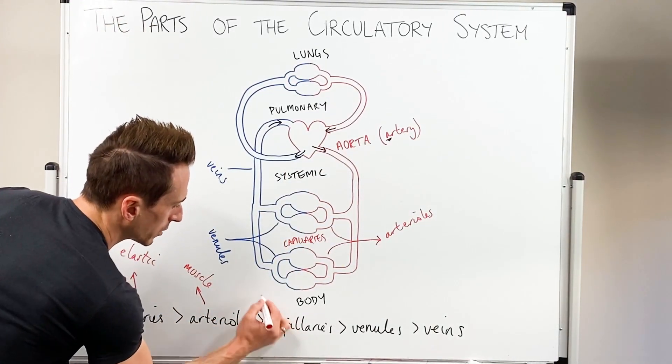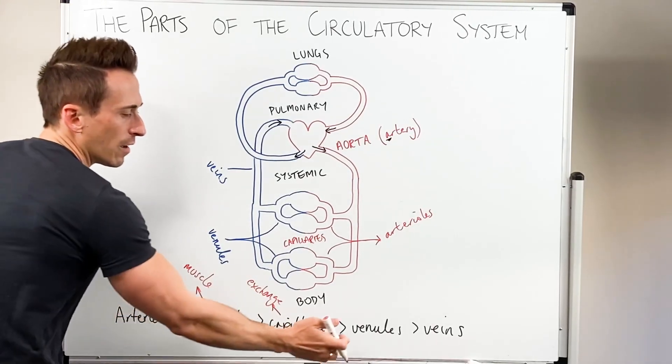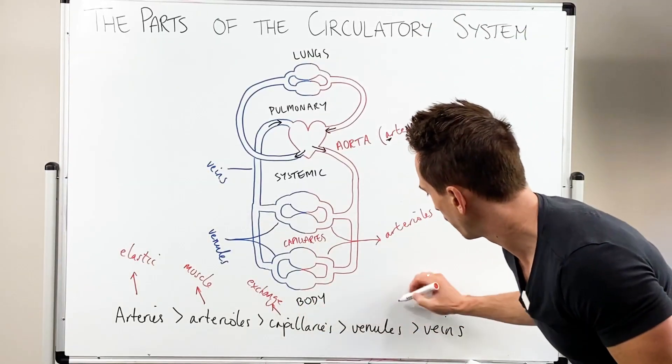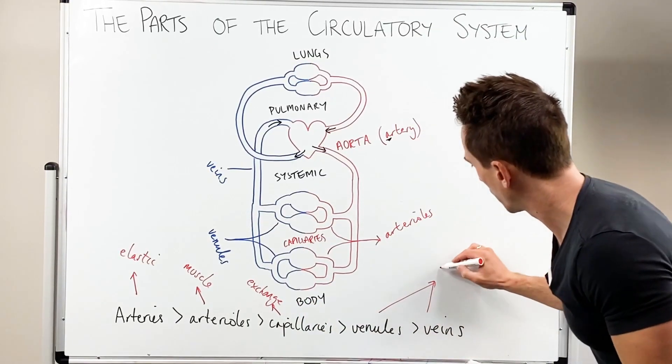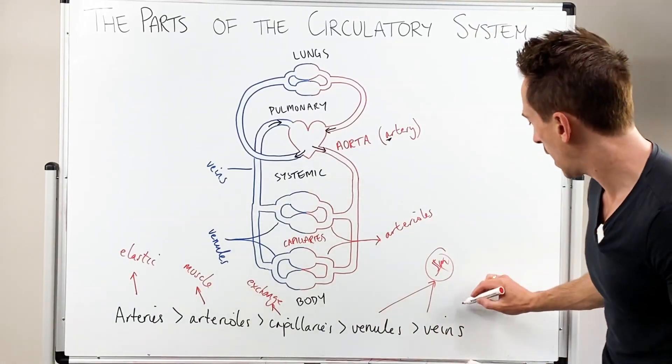Capillaries is the site of exchange. And venules and veins, they don't have smooth muscle. So smooth muscle, nope. But what they do have are valves.